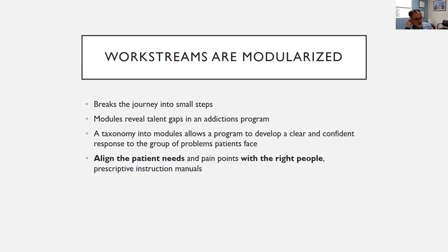With the module approach, you're basically breaking the journey down into small steps. It reveals talent gaps in an addiction program — if there's a module your program can't resolve, patients are not going to do as well. You want to get a taxonomy or classification of the patient's problems into modules, which allows for a clear and confident response. Then you align the patient's needs with the right people or prescriptive instruction manuals about how to address their problems.